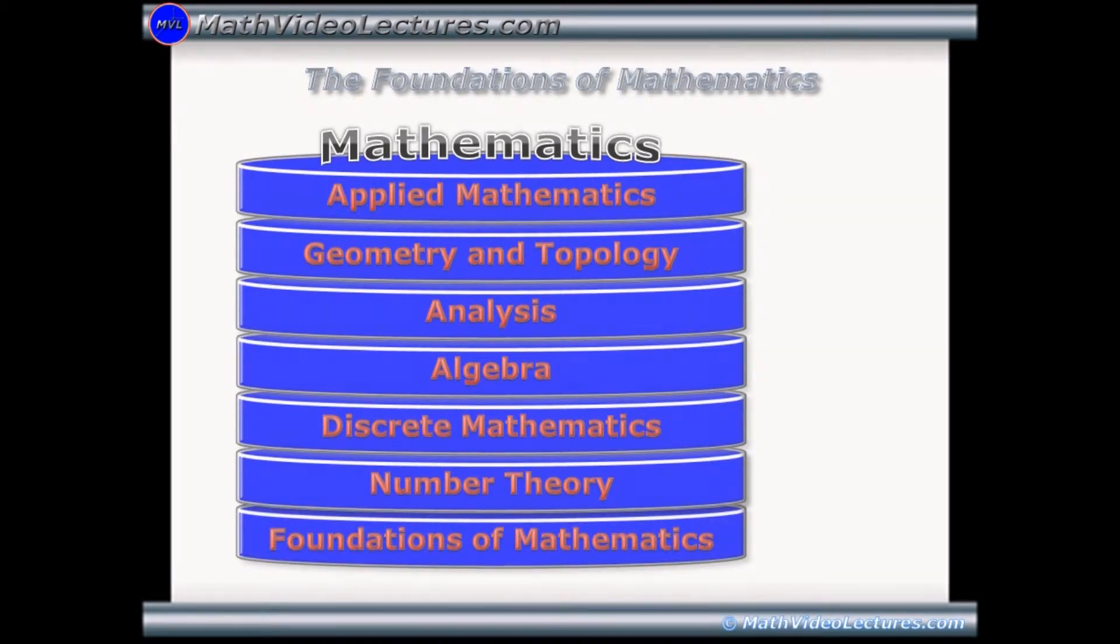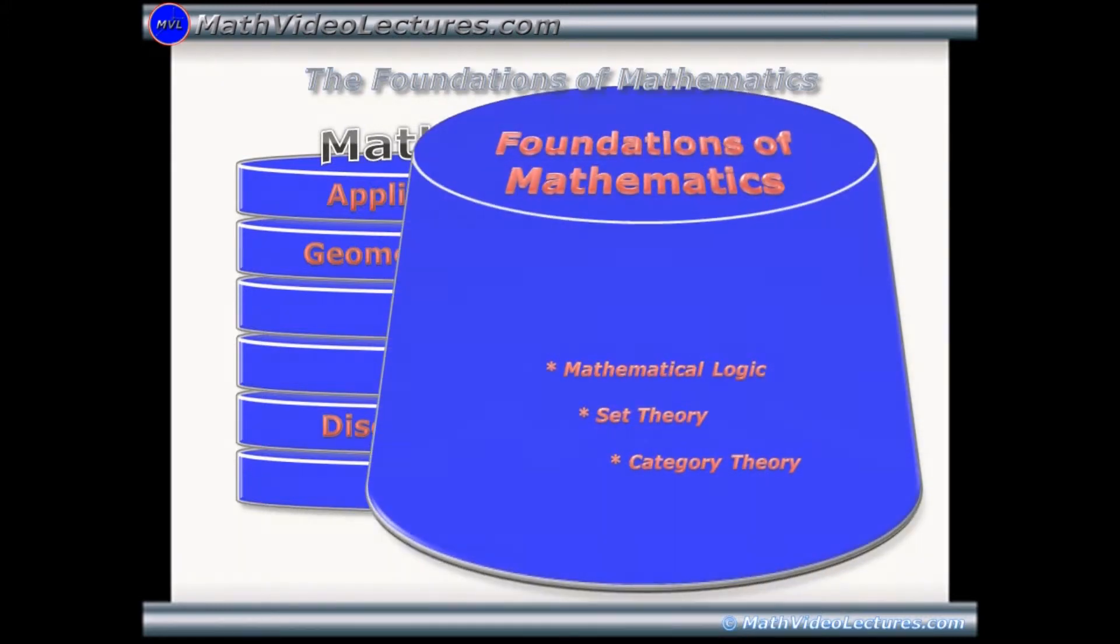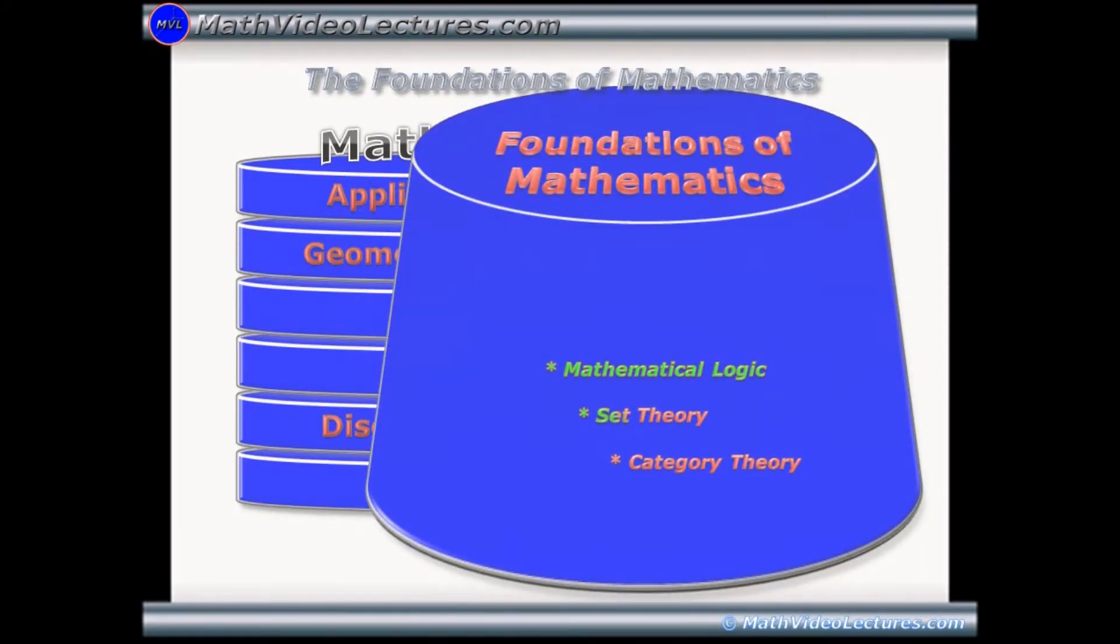A more or less acceptable division of the science of mathematics includes these seven major areas, which could be further divided as follows. Foundations of mathematics, including mathematical logic, set theory, and category theory.